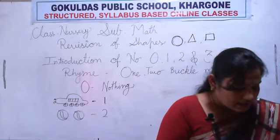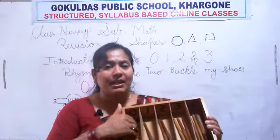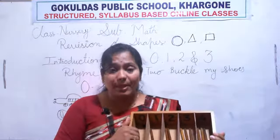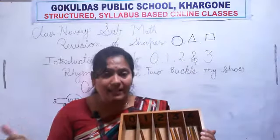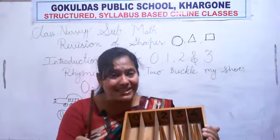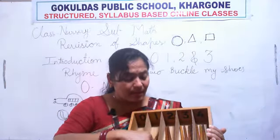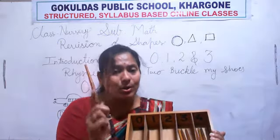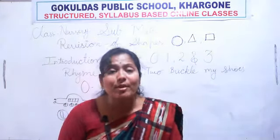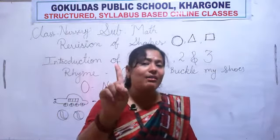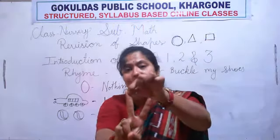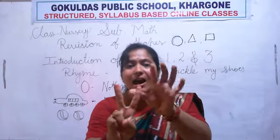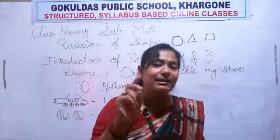Now see here students — repeat again. In this box, how many sticks? No sticks here, so nothing — zero. Now next: how many sticks? One stick. Now next: how many sticks? One, two — two sticks. Now put up your fingers — one and two. Repeat after me: one, two. How many fingers? Two fingers. Put up your two fingers — one, two.